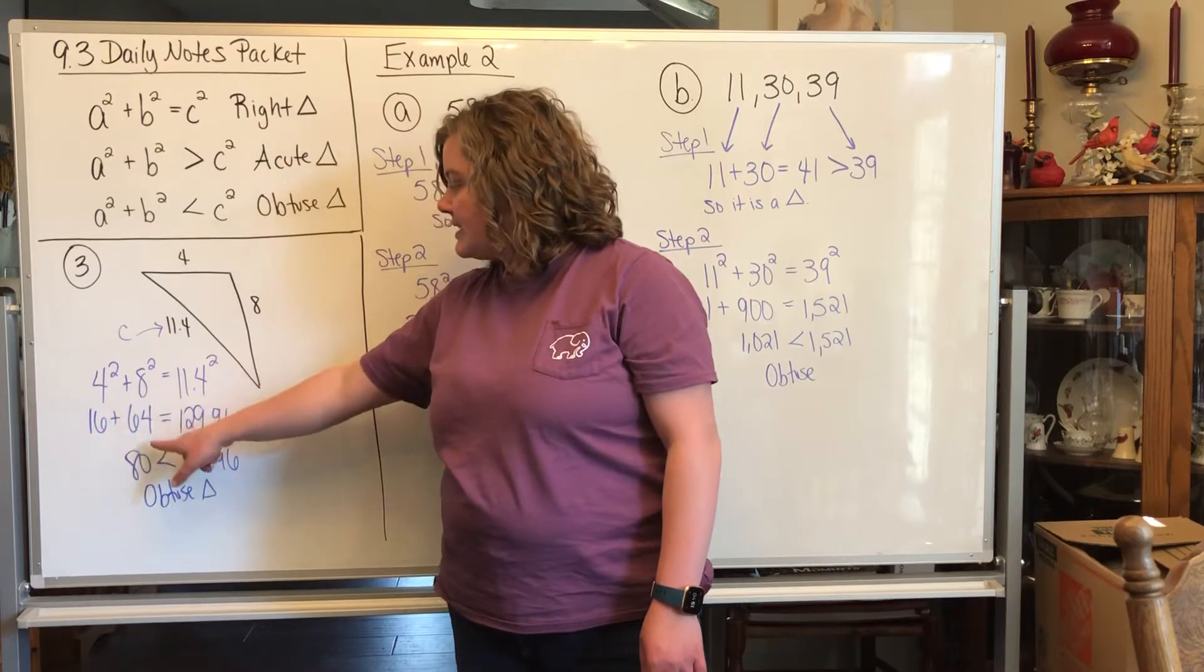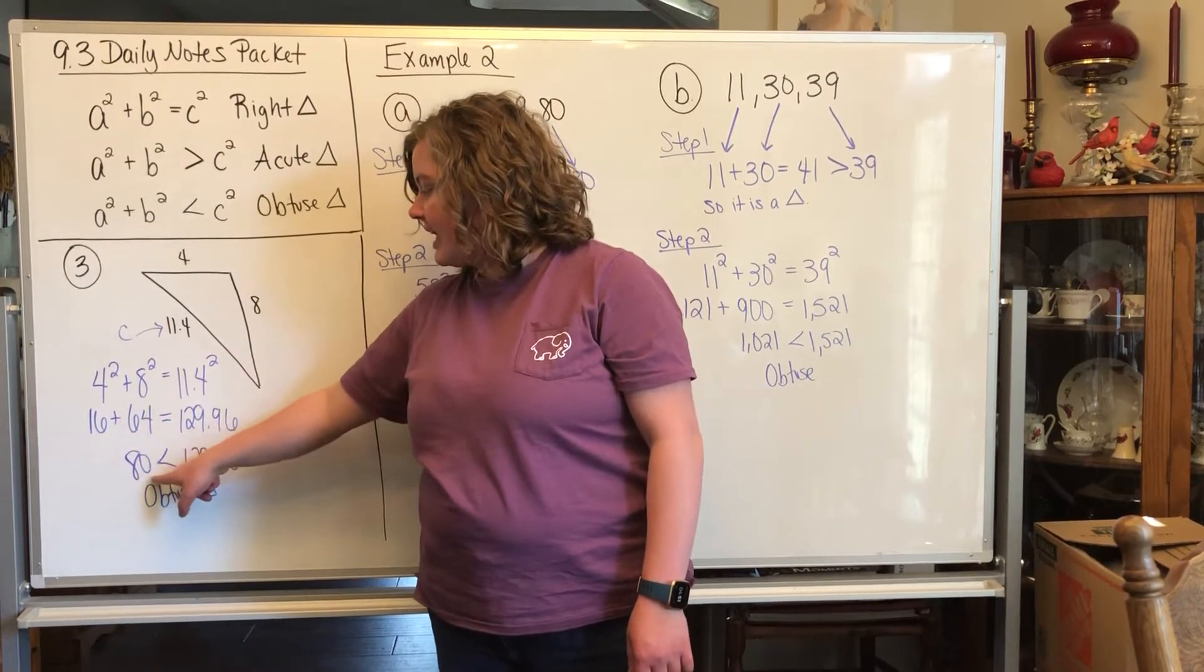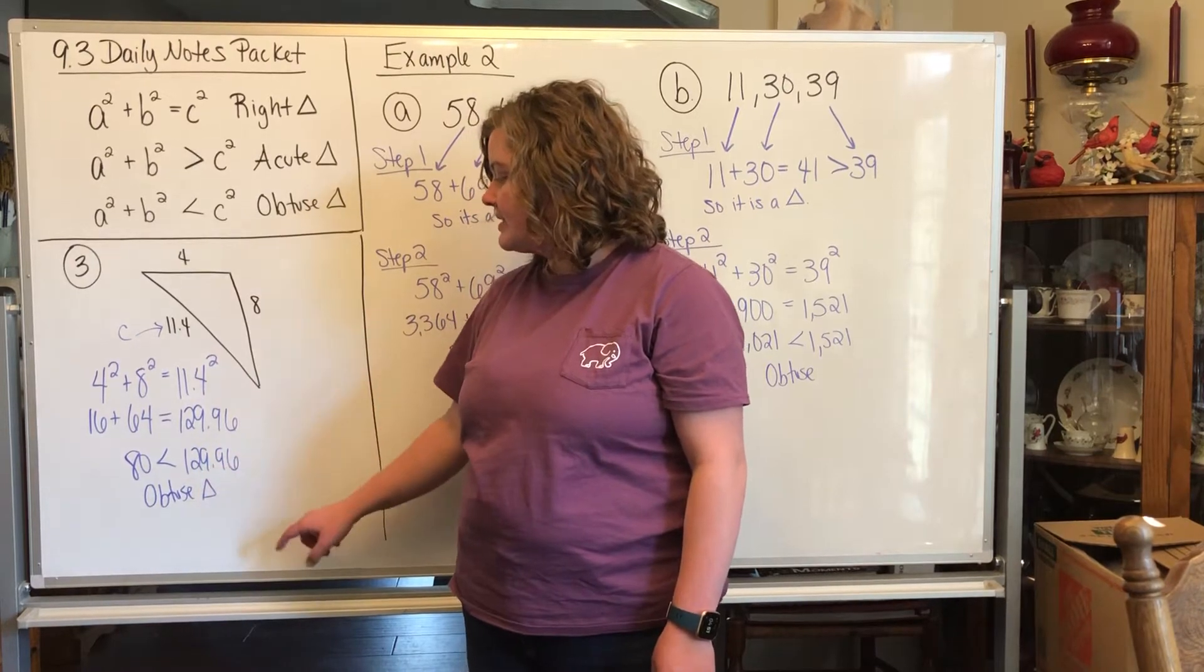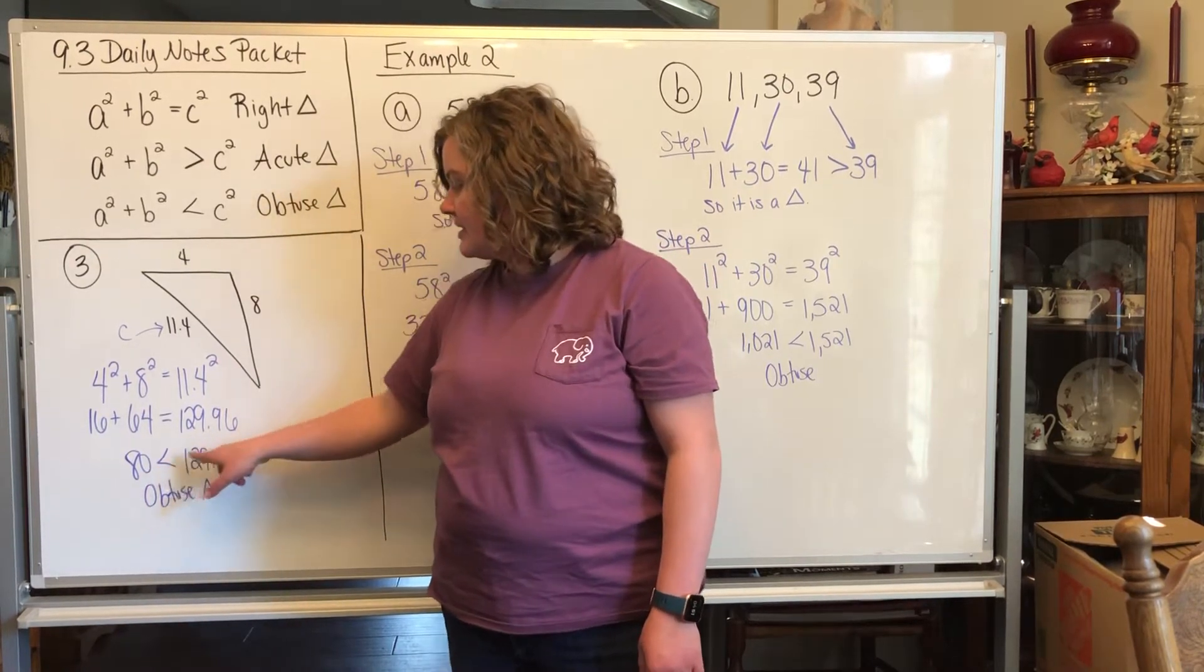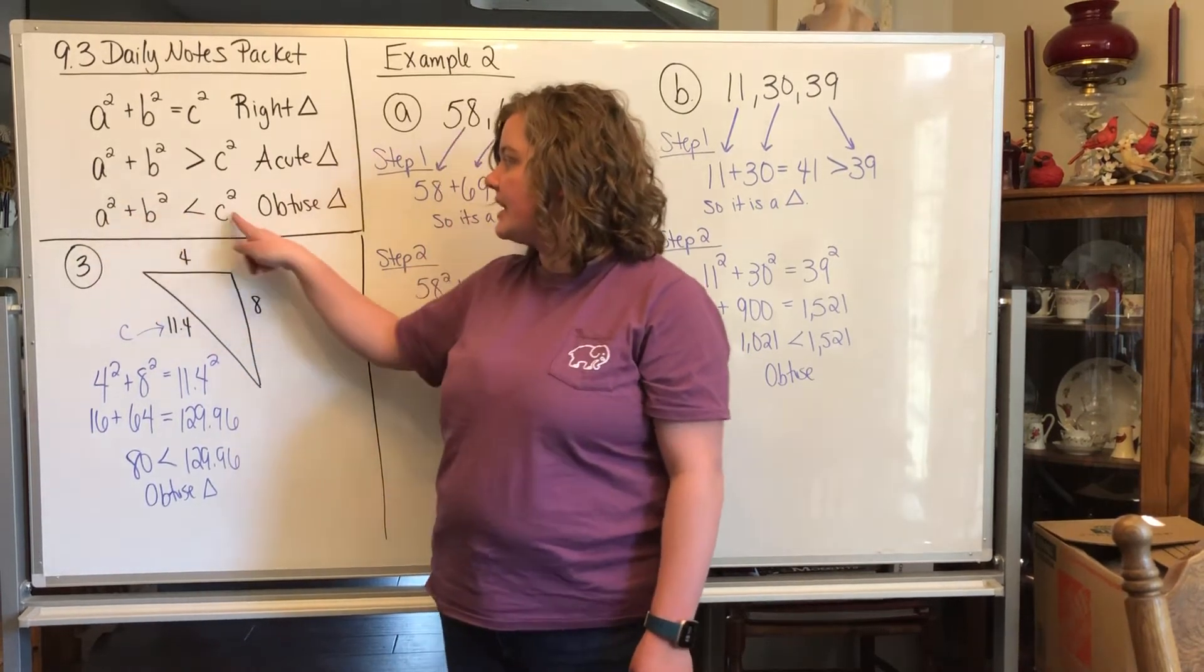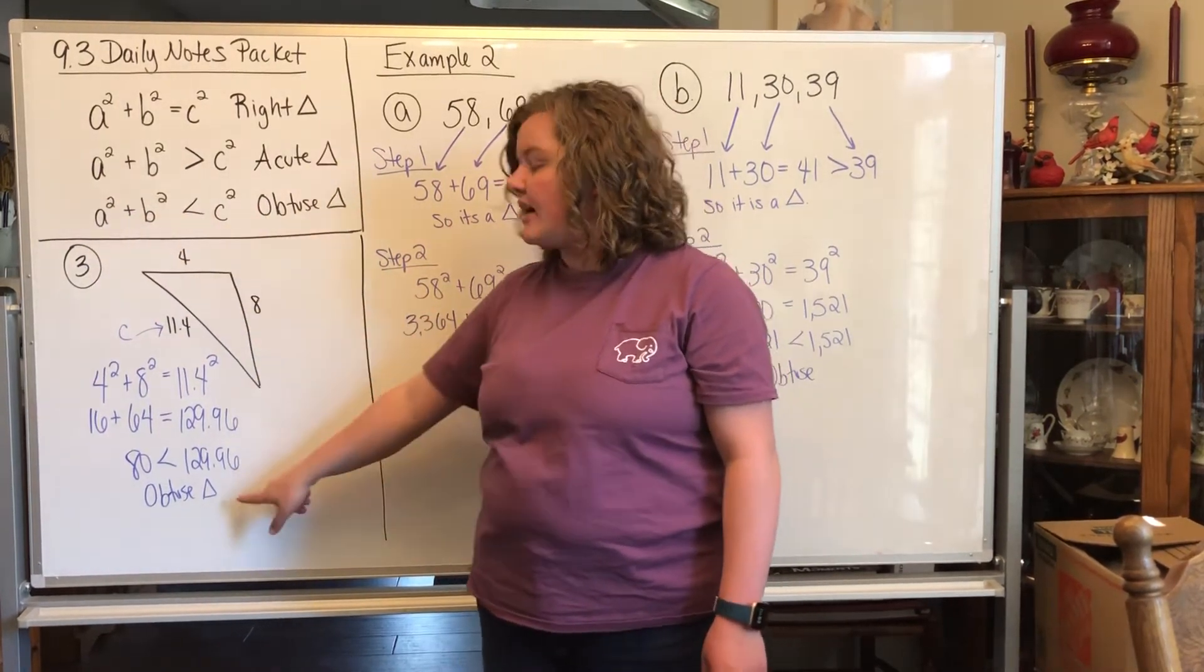When you do 4 squared plus 8 squared, square them and add together, you get 80. 11.4 squared is 129.96. So since 80 is less than 129.96, adding them together is less than the C squared, it's an obtuse triangle.